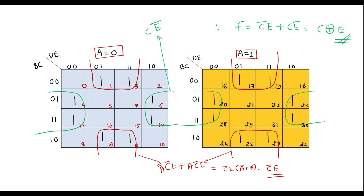This is how we are supposed to use a 5-variable Kmap. In my next video, I will take one more example on the 5-variable Kmap. Thank you for watching.